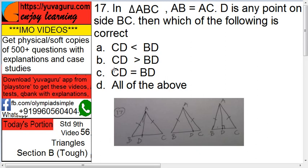CD equals to BD. Is it possible? Yes. If D is at the center exactly, then what will happen? CD and BD will be equal.